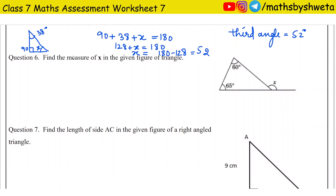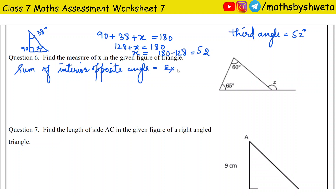Question number 6: Find the measure of x in the given figure. The exterior angle of a triangle is equal to the sum of the interior opposite angles. So, the sum of the interior opposite angles equals the exterior angle. Therefore, 60 plus 65 degrees equals x, so x equals 125 degrees.